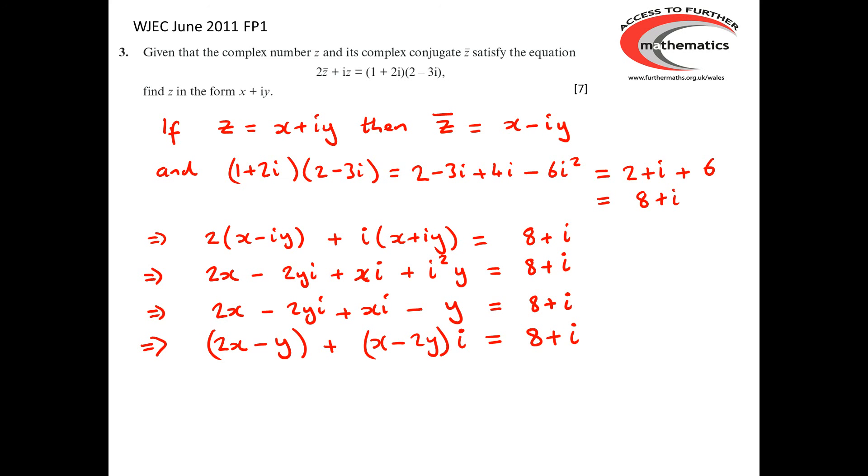The real part of the left-hand side is 2x - y. The real part of the right-hand side is 8. So we must have 2x - y = 8. The imaginary part of the left-hand side is x - 2y. The right-hand side has an imaginary part of just i. That's 1i. So we must have x - 2y = 1.